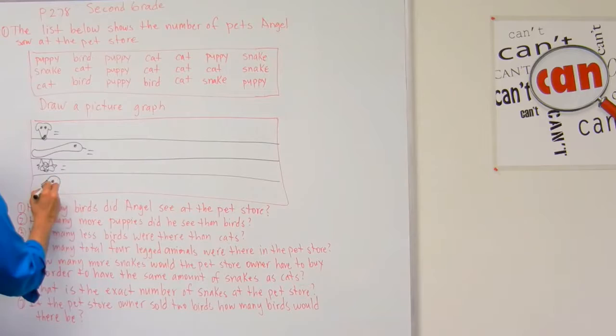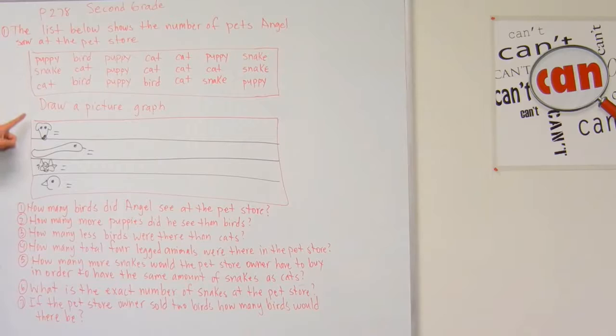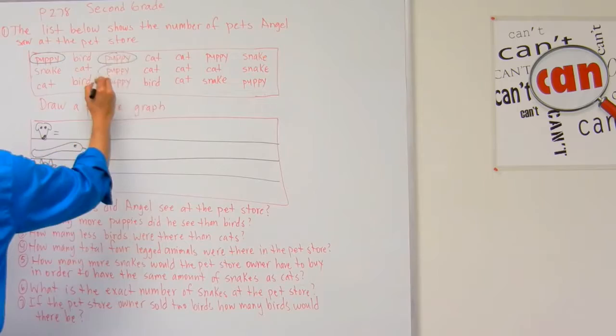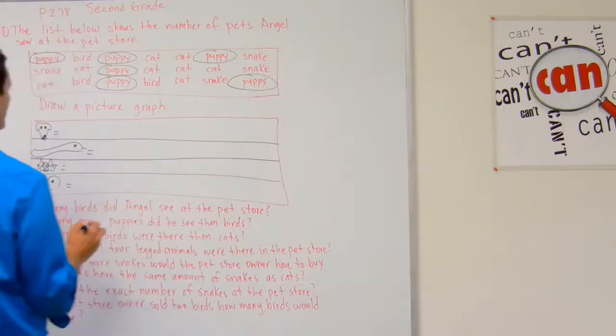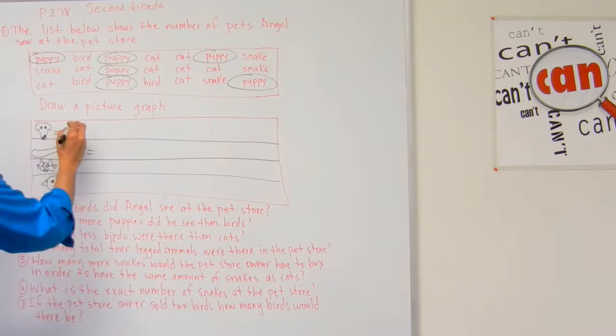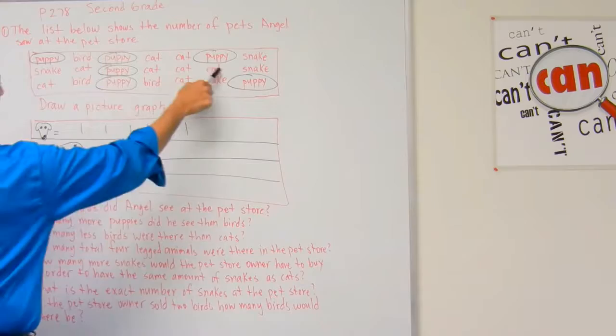Now let's see how many puppies we have, how many snakes, how many cats, and how many birds. Starting with puppies: one, two, three, four, five, six — we've got six puppies total.